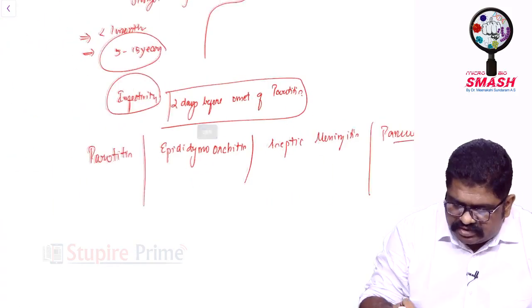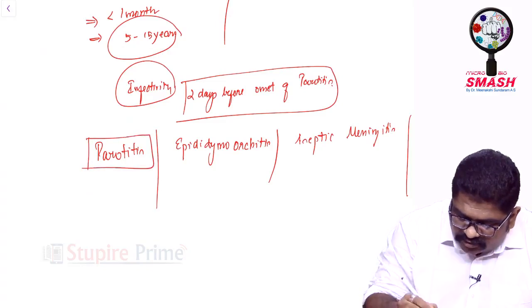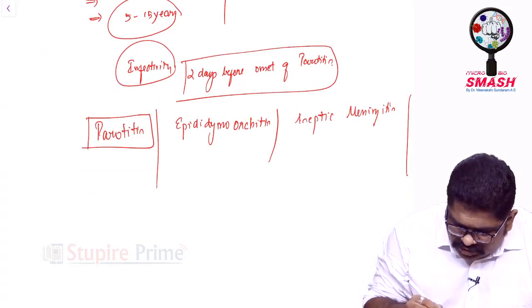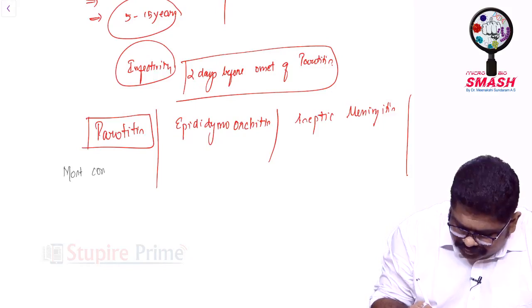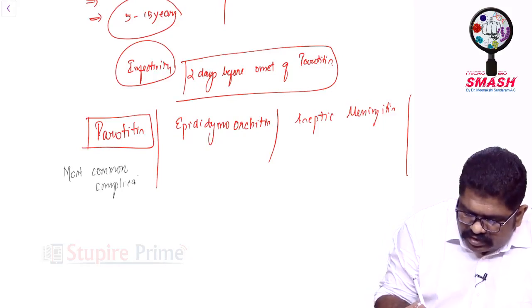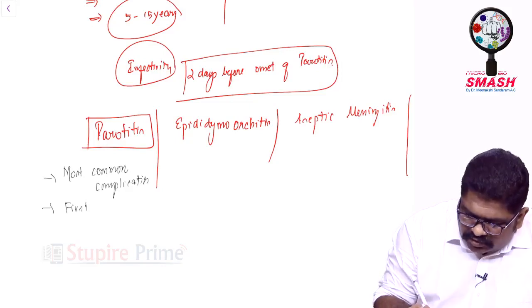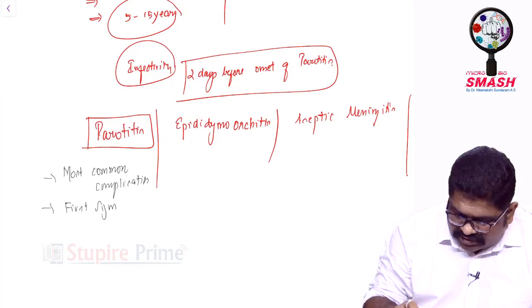What is the uniqueness of parotitis? This is the most common complication and will be the first sign to be noticed when a patient has mumps infection.